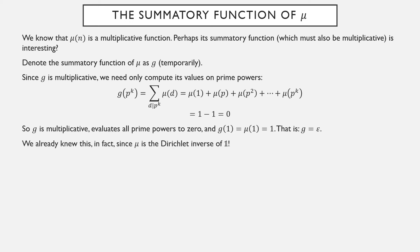We already knew this because we established that µ is the Dirichlet inverse of the one function. The convolution of µ with the one function is just the epsilon function, and convolution with the one function is exactly taking the summatory function.